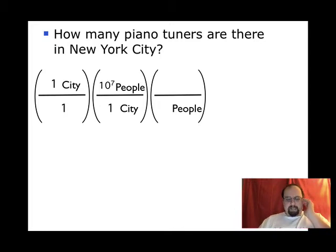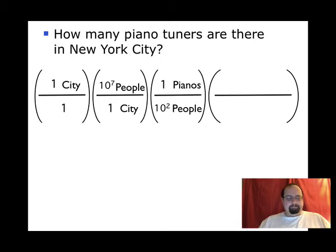We want to turn people into piano tuners. I think we're going to go by way of pianos. So how many pianos does each person own? No. Each person doesn't own a piano. It's the other way around. I would say there's one piano, more than one for every 100 people. But definitely less than one for one. So it's got to be 1 to 10. Remember, you can only have powers of 10. So I would say one piano for every 100 people. 10 to the 2.